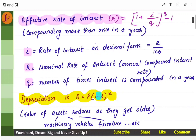Effective rate of interest: in cases where compounding happens more than once in a year — suppose you want to compound every three months or six months, or every month — the effective rate of interest is given by 1 plus i by q to the power q. q is the number of times the compounding happens.